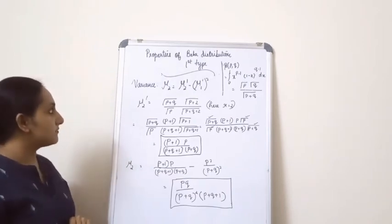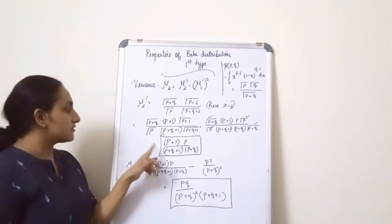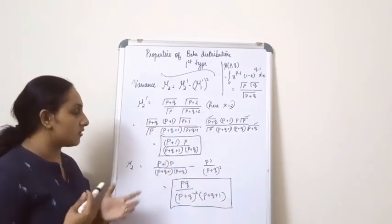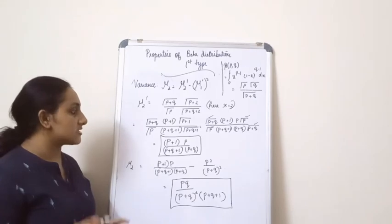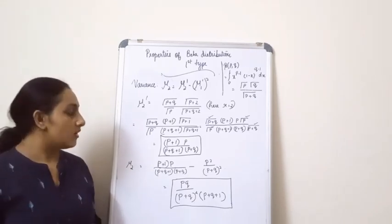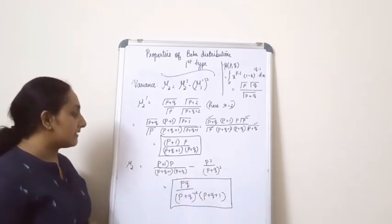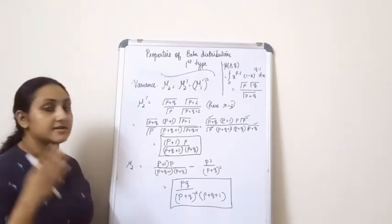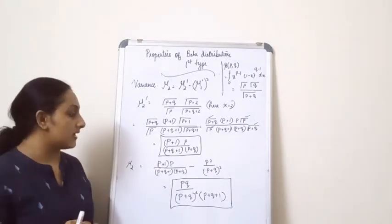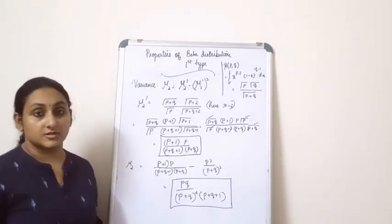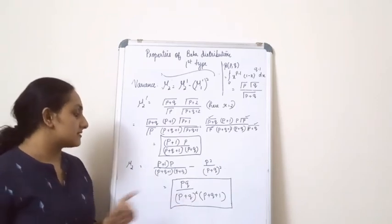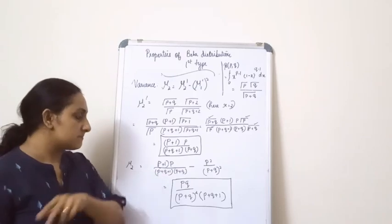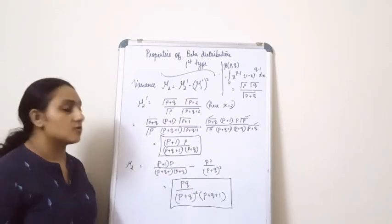To find the variance mu_2, we substitute mu_2' = p(p+1)/[(p+q)(p+q+1)] and mu_1' = p/(p+q) into mu_2 = mu_2' - (mu_1')^2. After the mathematical calculations, the final result for the variance is pq / [(p+q)^2 * (p+q+1)].